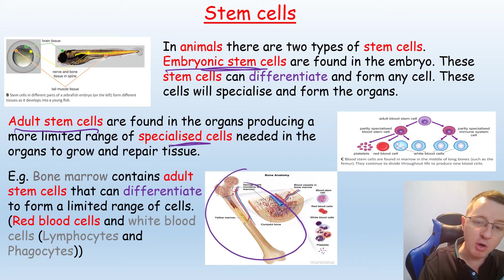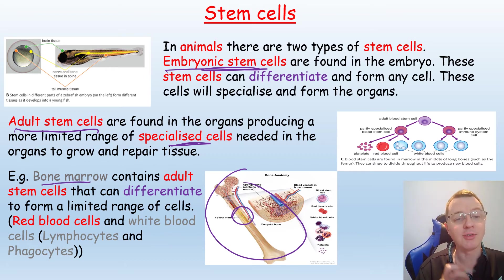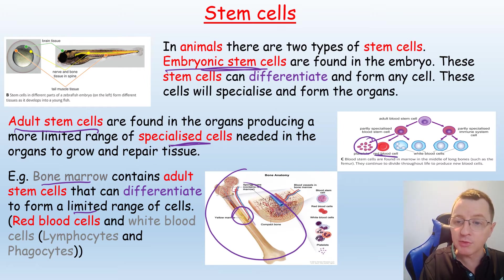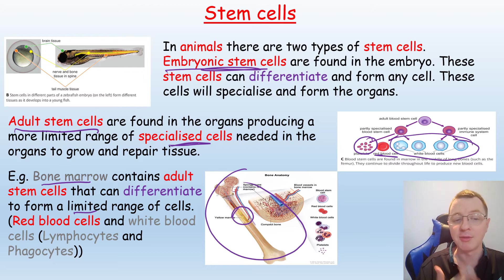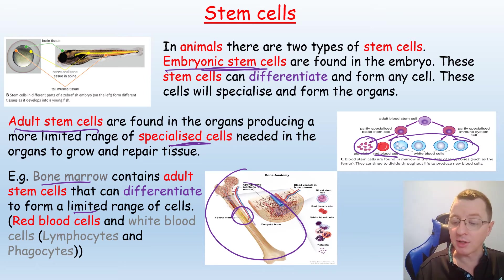Adult stem cells can produce a more limited range of specialised cells needed for the organs to grow and repair their tissues. For example, the yellowish tissue in the very centre of a bone — known as bone marrow — contains adult stem cells that can differentiate and form platelets, red blood cells, and a small number of different white blood cells, including lymphocytes and phagocytes. This is a much smaller range of cells compared to an embryonic stem cell.